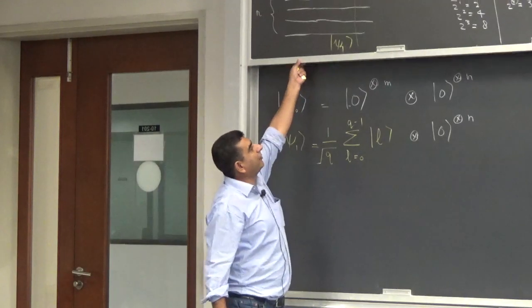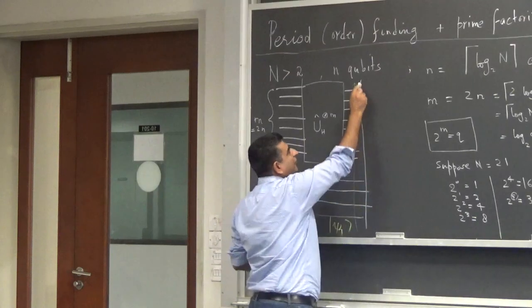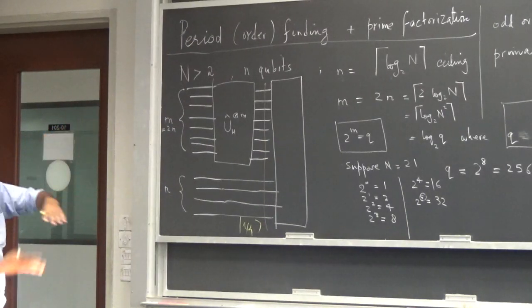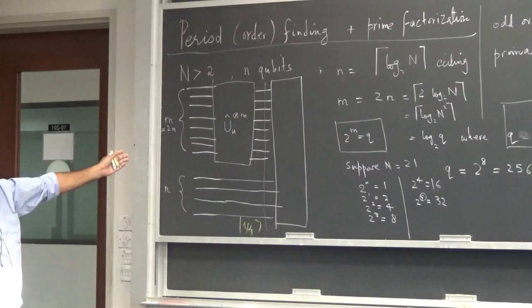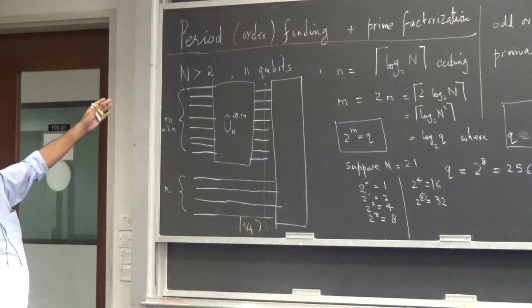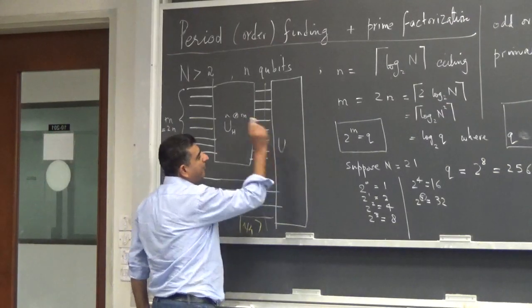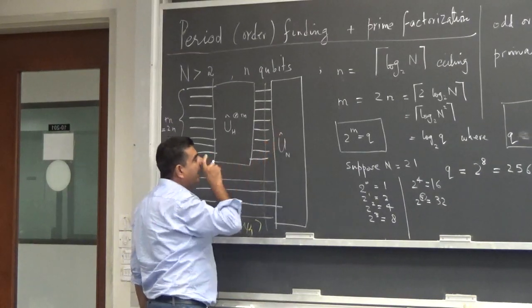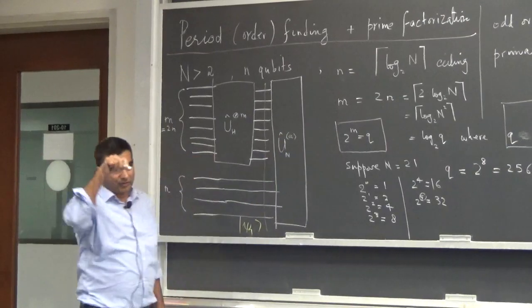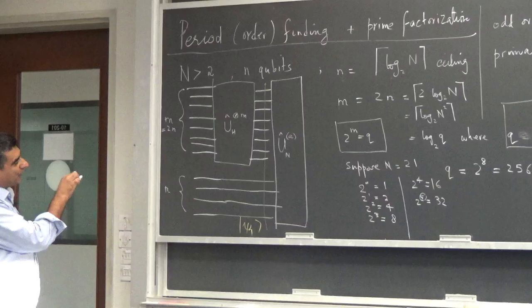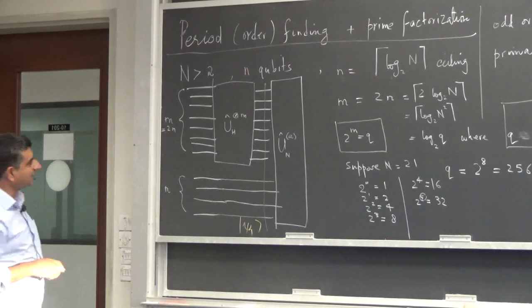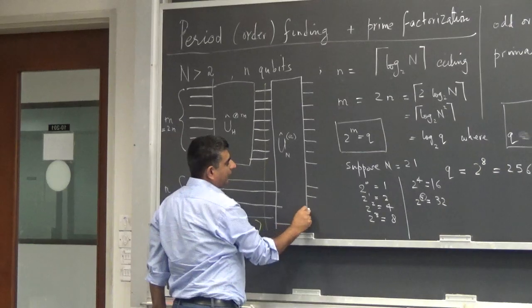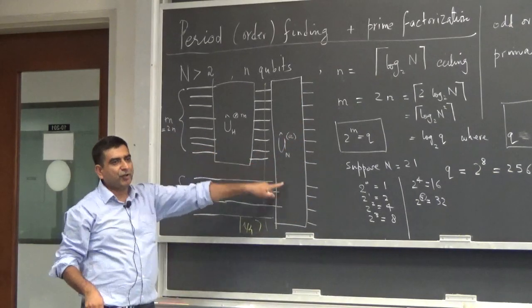Now I apply a big unitary gate — a really big gate — and you can imagine how difficult it might be to implement such an error-free gate because it involves so many qubits, making it prone to errors. That's why this is so difficult to do practically. Anyway, let's assume we have this big gate, and call the unitary operation U_N with a label A on top. I still have m qubits in the first register and n qubits in the second register. Now I need to define the operation of this unitary gate. This is a controlled unitary operation.